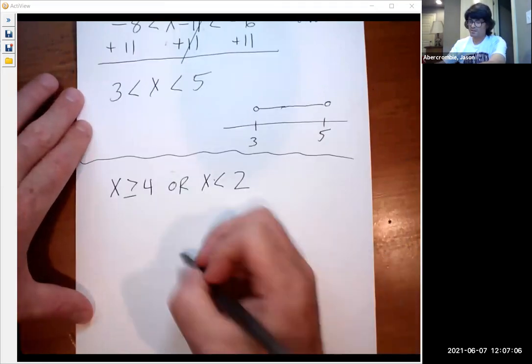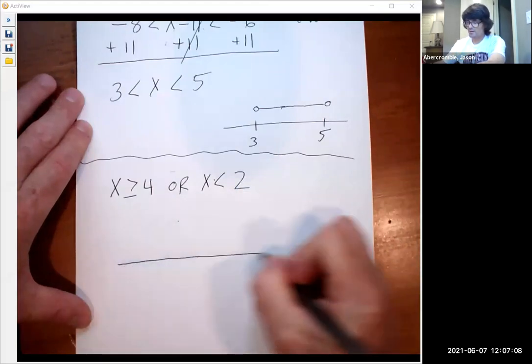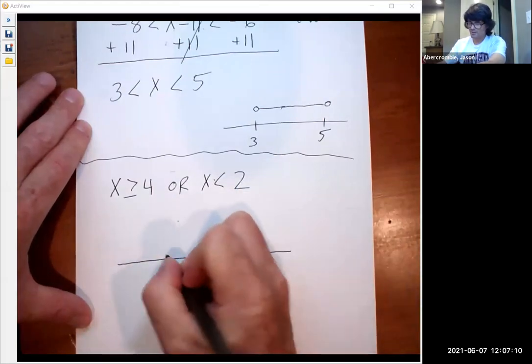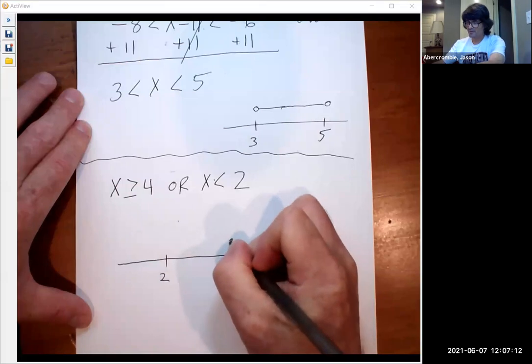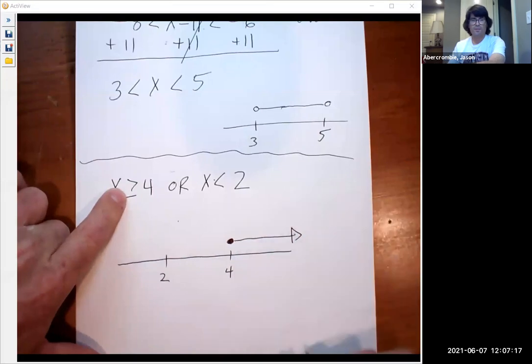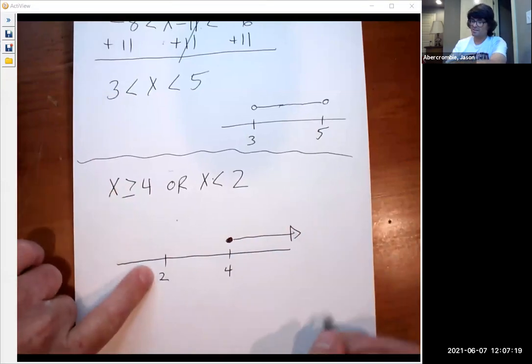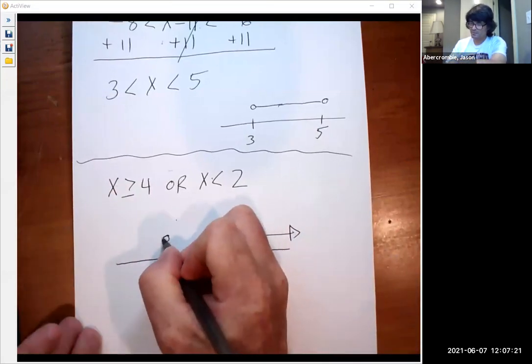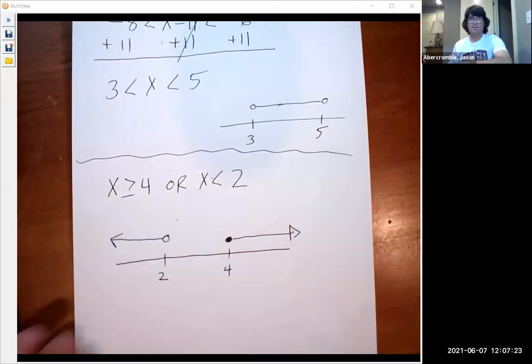And so the way you would graph this is you draw your number line. You have 4, you have 2. Because x is bigger than or equal to 4, we're going to have a solid dot. We're going to go right. And then if x is less than 2, we're going to have an open dot, less than is left. So that's just the very basics of solving and graphing linear inequalities.